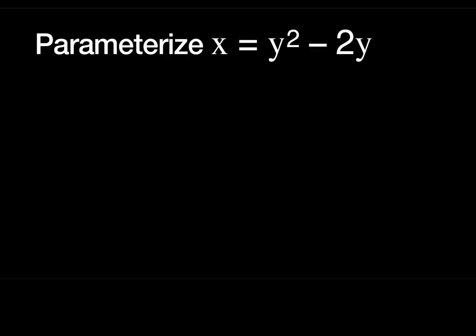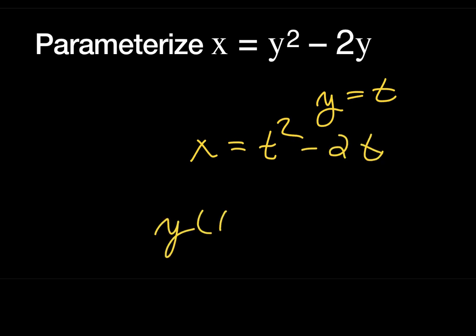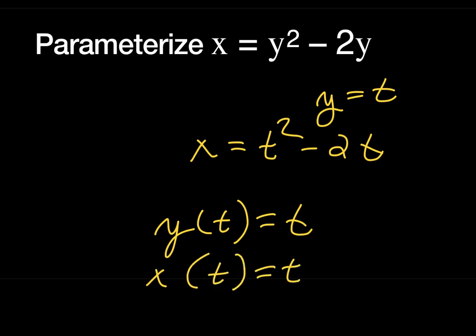To parametrize the equation: since y is more complicated, let y = t. Then x = t² - 2t. So the parametric equations are y(t) = t and x(t) = t² - 2t. Parametrizing a Cartesian equation is usually easier than the other way around. That's the last slide.